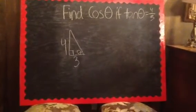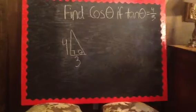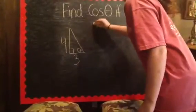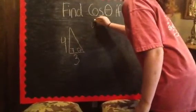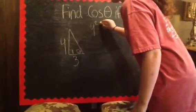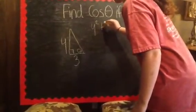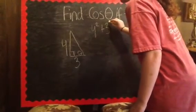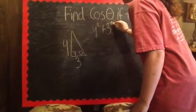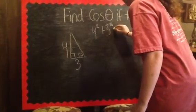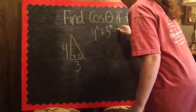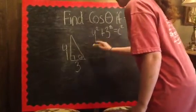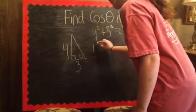you're going to do the Pythagorean Theorem, which is a squared plus b squared equals c squared. Then solve for c.